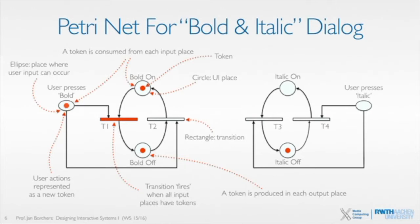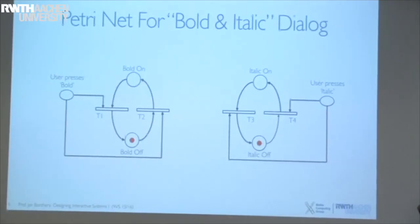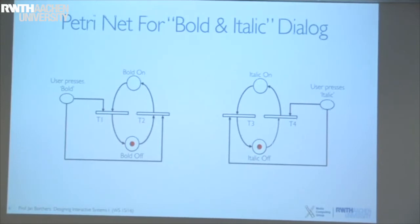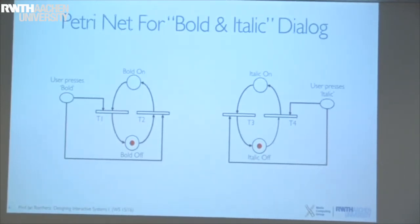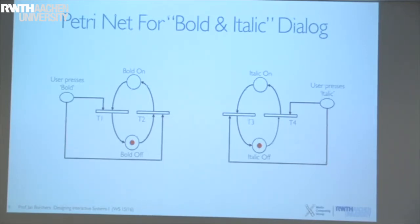The distribution of tokens across the entire network as a whole represents the state. In this case, a token here and a token here together model the state 'italics off, bold off' — which is one state in our original state transition network. Remember when we drew it there was one state for bold off/italics off, one for bold off/italics on, and so on, and here the distribution of tokens around the network represents that state.